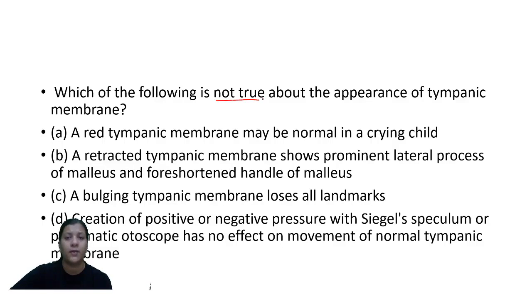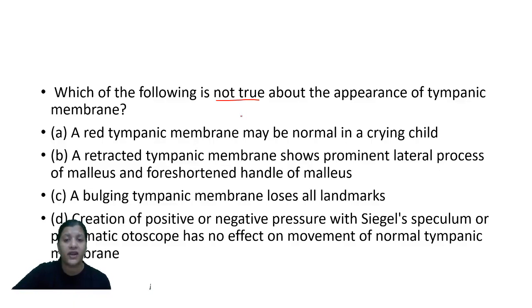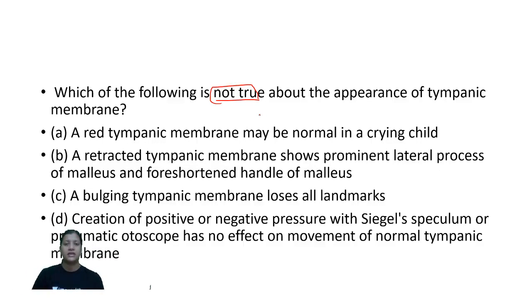Which of the following is NOT true about the appearance of the tympanic membrane? A: red tympanic membrane may be normal in a crying child. B: retracted tympanic membrane shows prominent lateral process of malleus and foreshortened handle of malleus. C: bulging tympanic membrane loses all landmarks. D: creating positive or negative pressure with a Siegle speculum or pneumatic otoscope has no effect on movement of the normal tympanic membrane. Put your answers in the comment section.